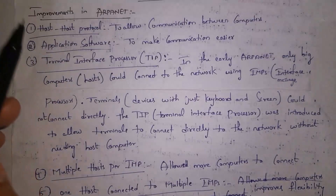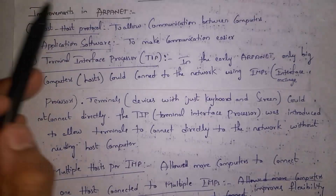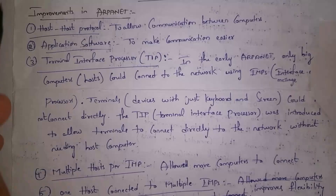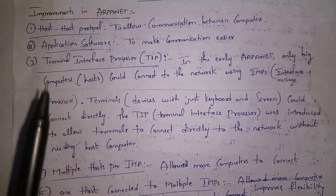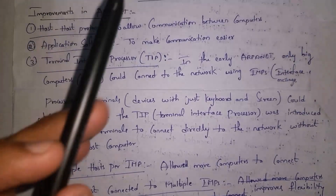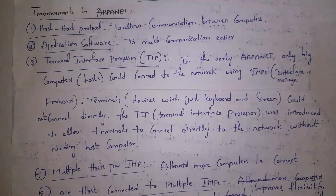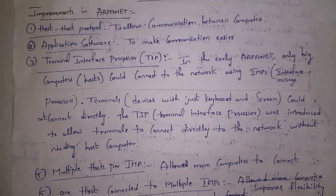These are the improvements in ARPANET. The first improvement is the host-to-host protocol. A protocol is a set of instructions — by using the host-to-host protocol, computers can communicate with each other. The second improvement is application software — each computer needs to install one special software in order to communicate with each other, so if you want to use ARPANET you need that special software.